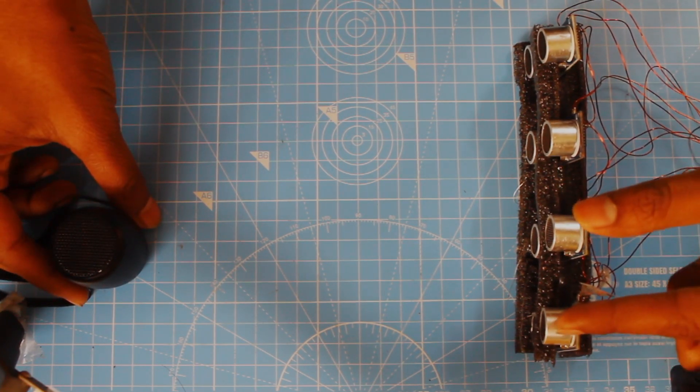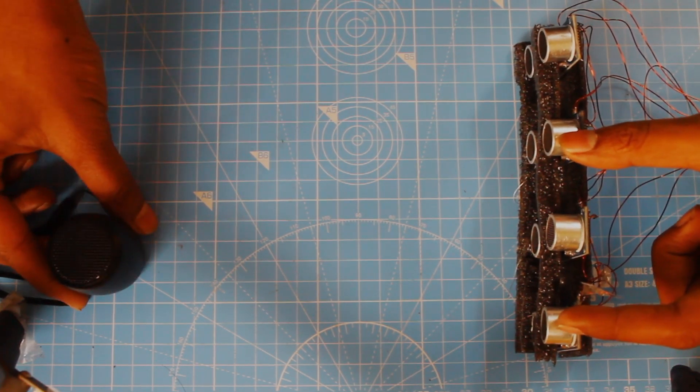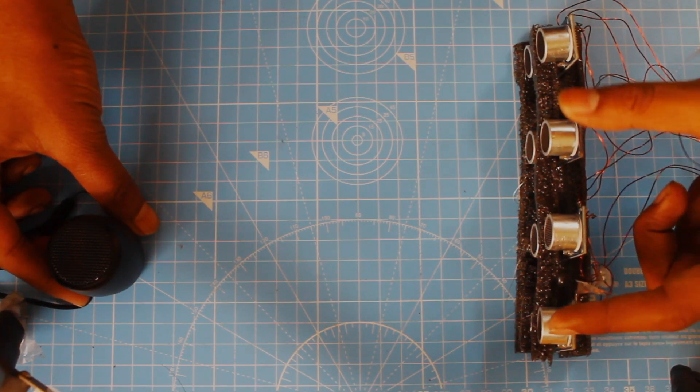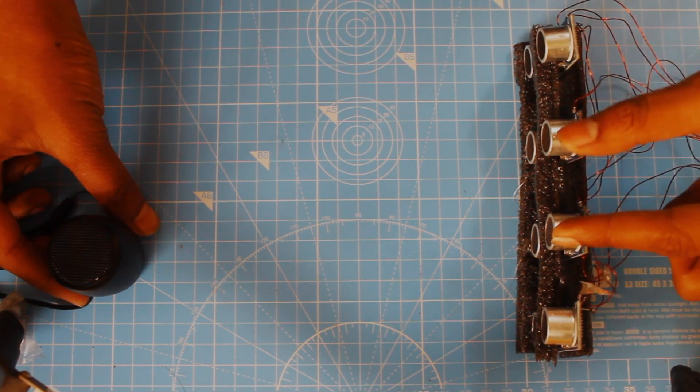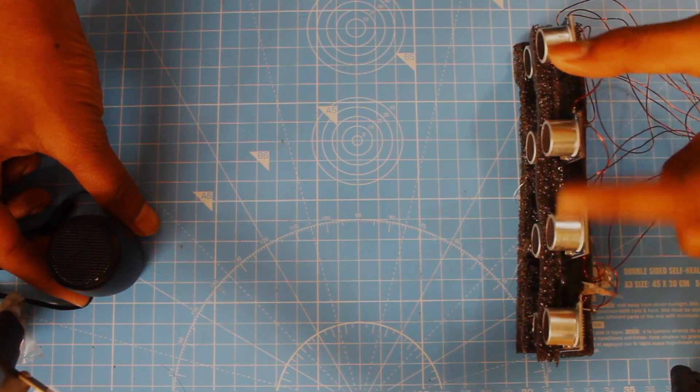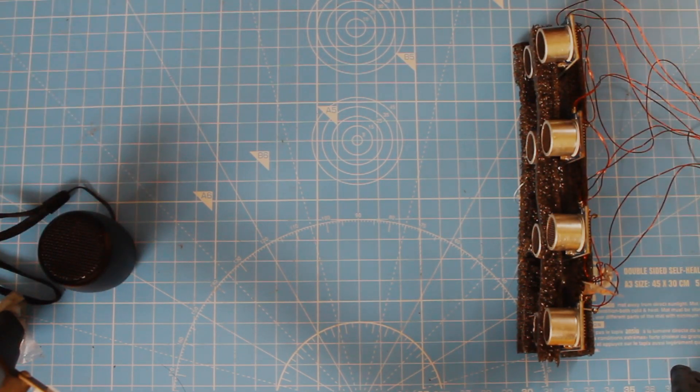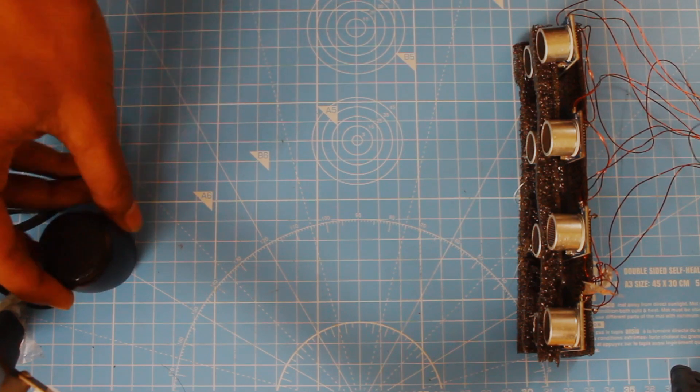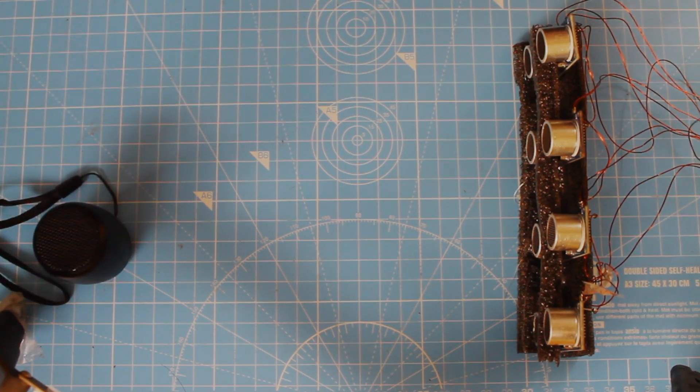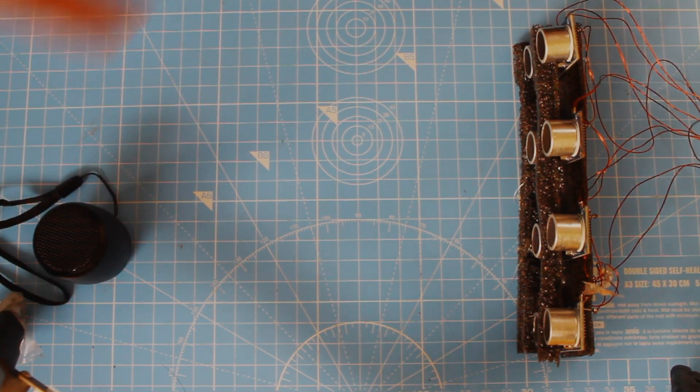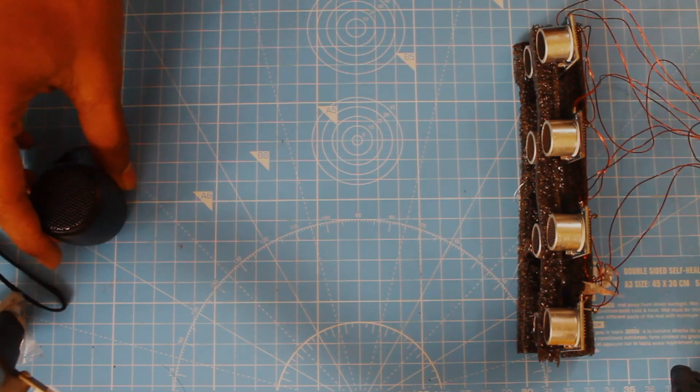Then it will take first and third. And again, it will do the same thing. Then first and fourth. Then it will take second and third, second and fourth. And it will take third and fourth. So that's how we will get around six combinations or six measurements for the object. And then we can use all of these six data to get accurate location of our target.